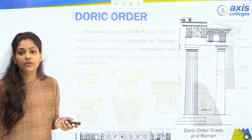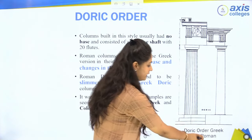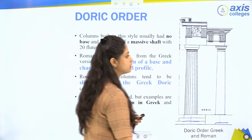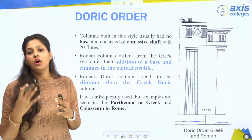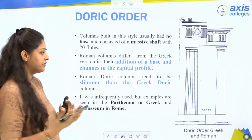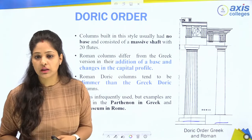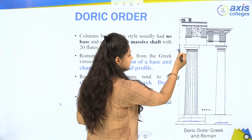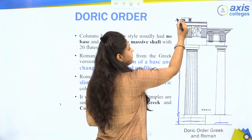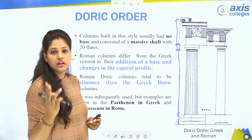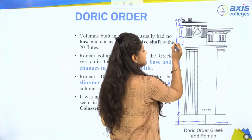Now we can see Doric order — Greek and Roman types side by side. Romans were developing, improving, and modifying. In the Greek Doric order there was no base. The column consists of shaft, base, capital, and entablature. The entablature has three portions: architrave, frieze, and cornice.